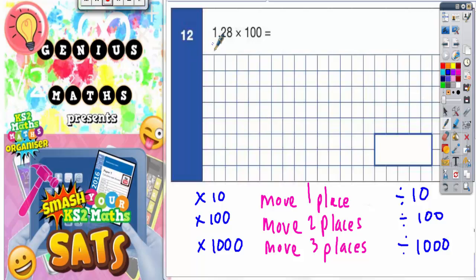Question 12: 1.28 times by 100. Now I've just got a few notes down at the bottom here. Remember, anytime you're multiplying or dividing by 10, 100, or 1000, you've got to move the digits of the number.